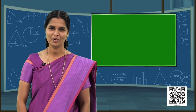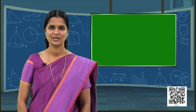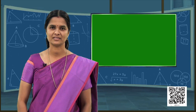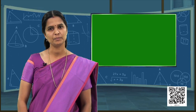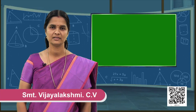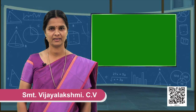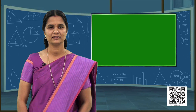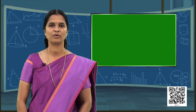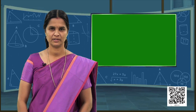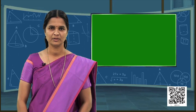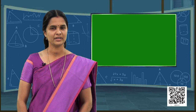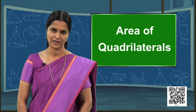Hello students. Hope you are familiar with the words perimeter and area of plane figures. Already in your previous classes you have studied about the area and perimeter of plane figures such as square, rectangle, triangle etc. We have also learned to find the area of pathways or borders in rectangular shapes. Let's extend this to find the area of some other quadrilaterals. So today we are going to learn about areas of quadrilaterals.